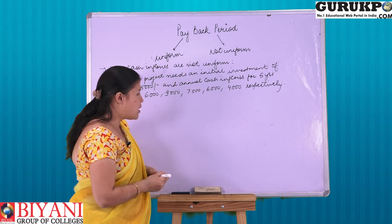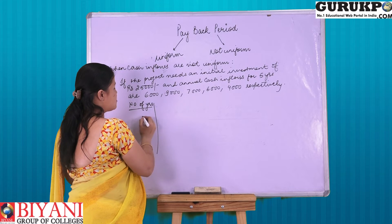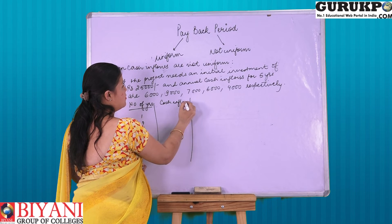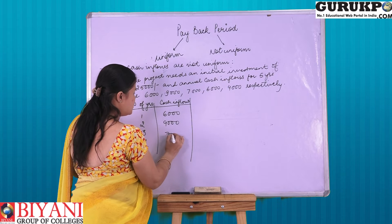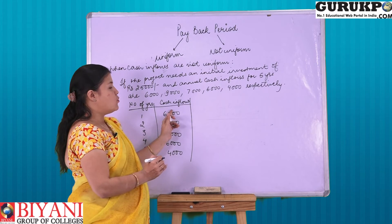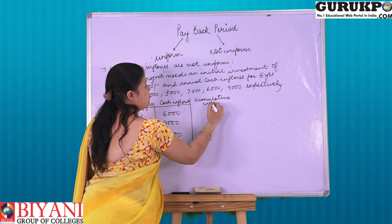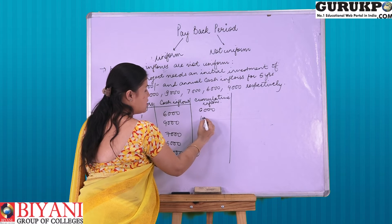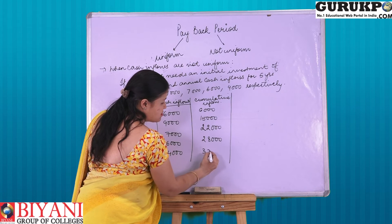First, just make a table. The number of years for which cash flow is given is 5, with cash inflows of 6,000, 9,000, 7,000, 6,000, and 4,000. Afterwards, we are going to accumulate the inflows — that is, add them one by one: 6,000, then 15,000, then 22,000, then 28,000, and lastly 32,000.